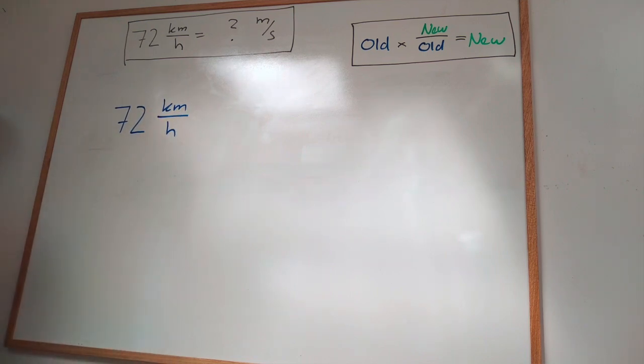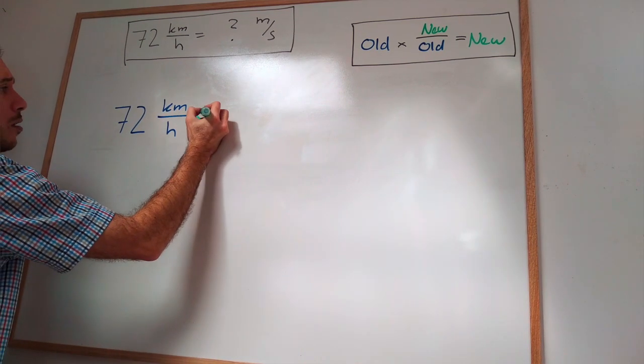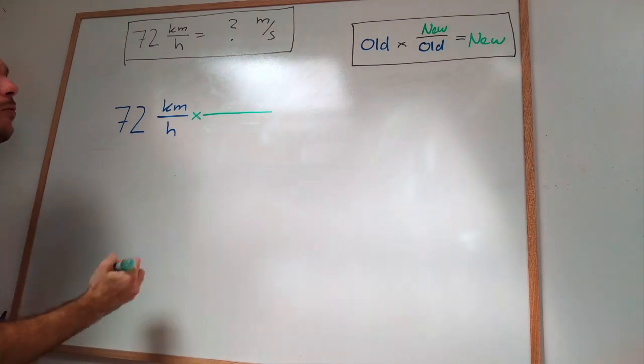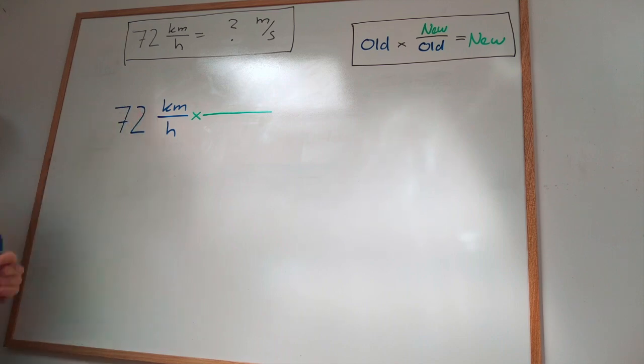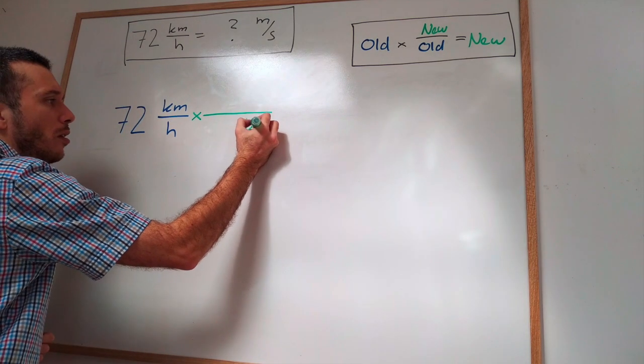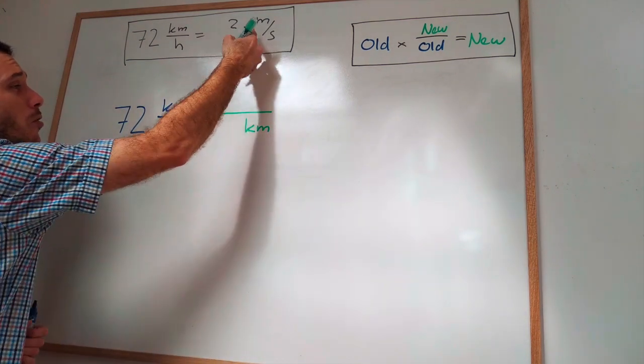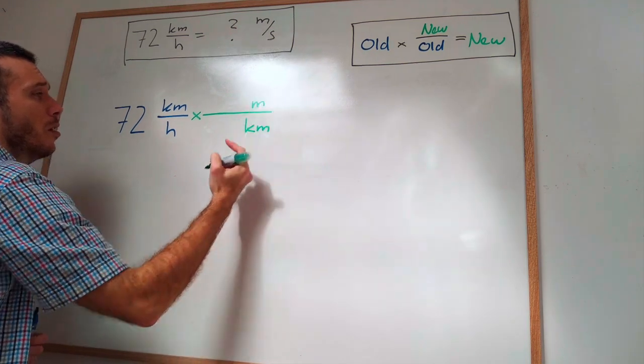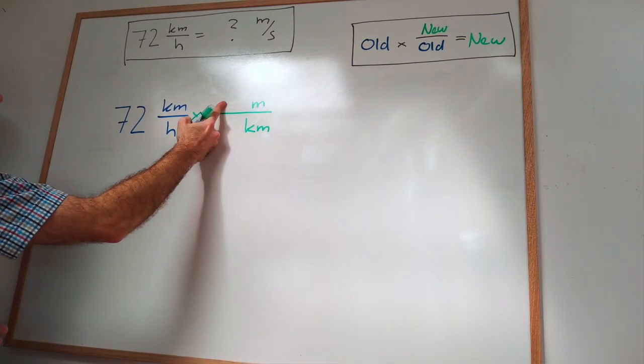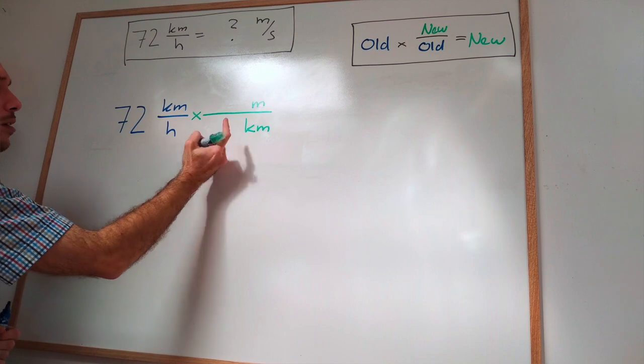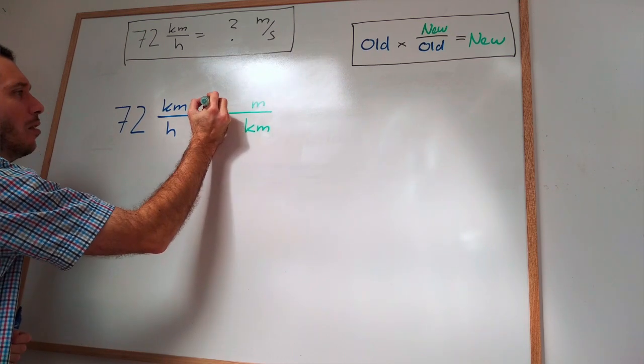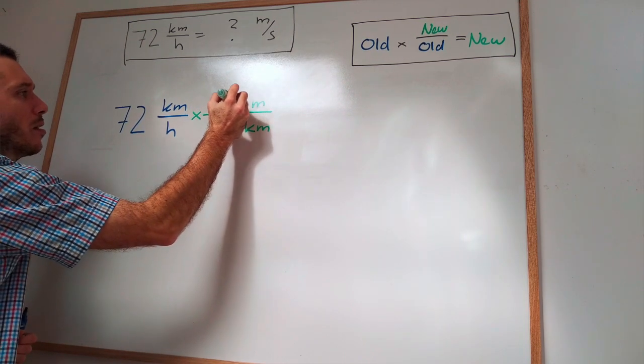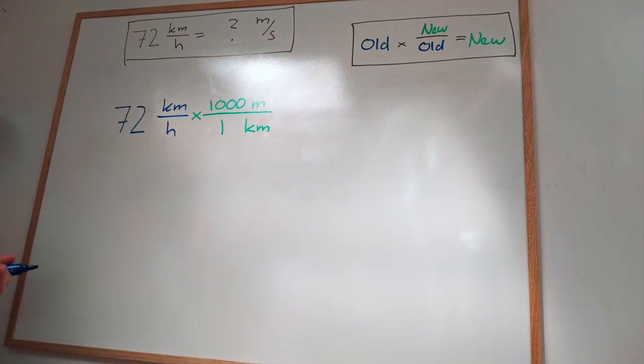I'm going to introduce a fraction. What do I want to get rid of? I want to get rid of the kilometer. What I want to convert into is the meter. Now the question is how many meters are there in one kilometer and the answer is one kilometer is thousand meters. That one you have to look up, either you memorize it or you put it on a cheat sheet somewhere.